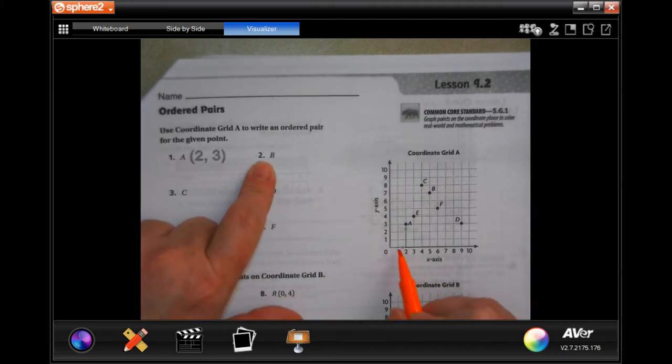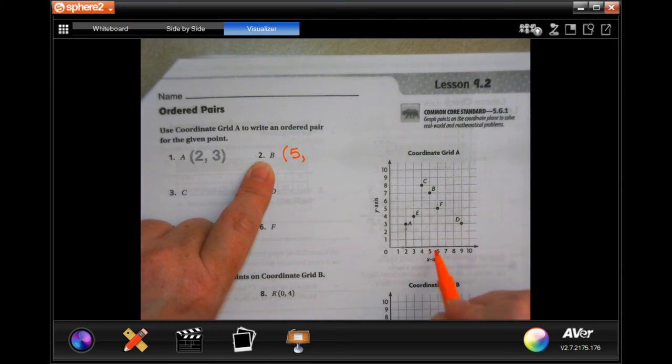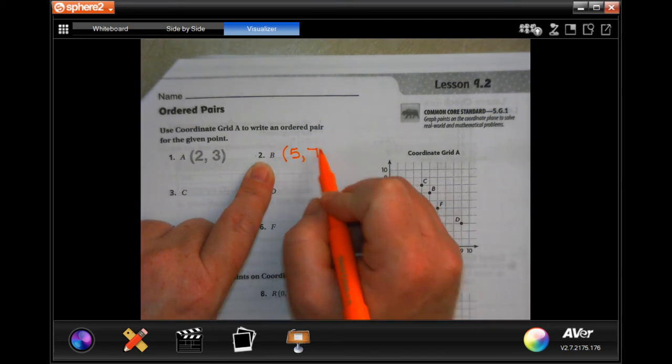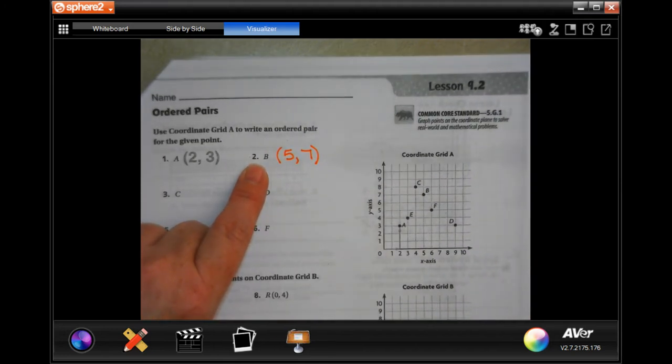On B, we go over one, two, three, four, five times. And we went up, it looks like seven times. Let's do the next one.